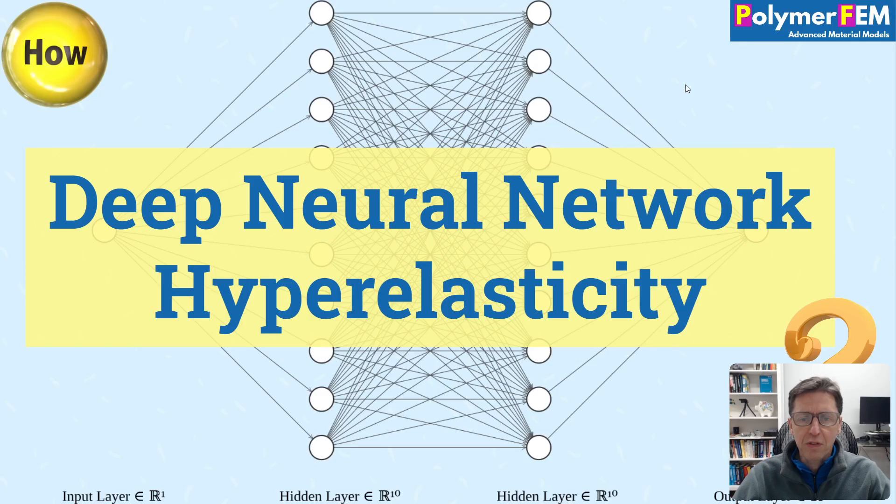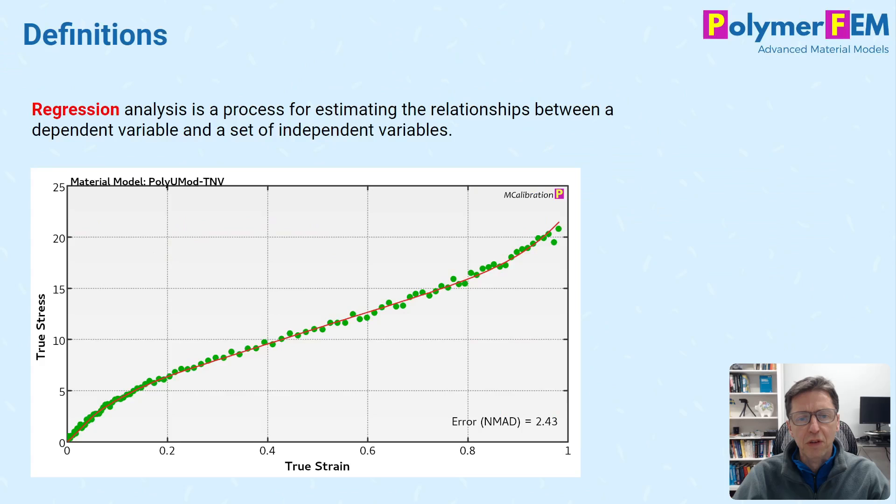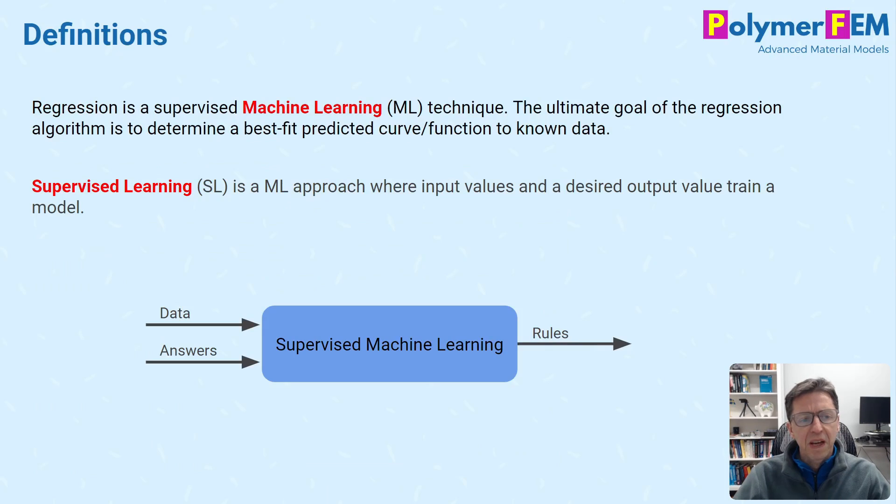Before I talk about all of this I'm going to introduce a few definitions. The first word I want to define is regression. Regression is a process of estimation between dependent and independent variables. Fitting a curve to data is a regression type approach and this is what MCalibration does. Another way to think about it is regression is actually a supervised machine learning technique where we find a regression algorithm that best fits the data in some sense.